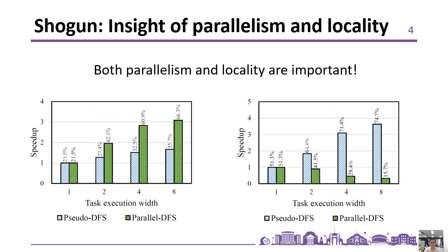Shogun leverages two insights. The first is that graph mining tasks can be executed out of order and barrier-free. The green bars in the left figure show that out-of-order scheduling improves the PE utilization rate and performance. The second insight is that out-of-order scheduling reduces intermediate data locality. Usually the locality loss is acceptable, but a monitoring mechanism is necessary to avoid cache thrashing. The right figure conducts experiments with a more complex search pattern and a larger graph, and the green bars show the consequences when data locality is not attended to.